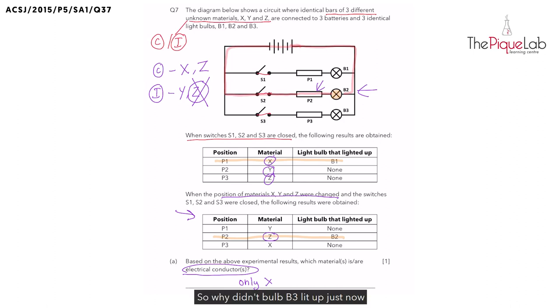So why didn't bulb B3 light up just now when material Z was connected beside it in table number one? To solve this mystery, we need to take a look at the last row here, the one that I'm highlighting now. When we move material X into position P3 like this, bulb B3 still did not light up.